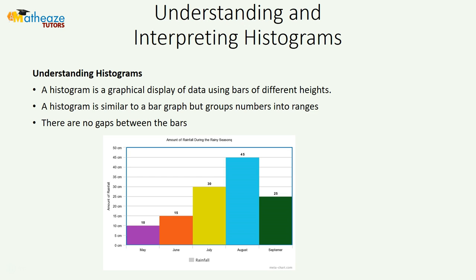A histogram is the graphical display of data using bars of different heights. The difference between a histogram and a bar graph is that the histogram can put values into groups of numbers, and you can put them into a specific range. Usually, there are no gaps between the bars. If you find a gap between the bars, it means that specific independent variable has no value — so it has a zero value.